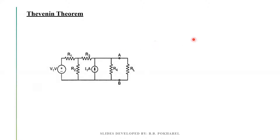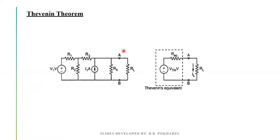We need to make the equivalent circuit. Now, let's take a look at the circuit. In the middle of this circuit, we can reduce it. Simply, we have voltage, we have resistance, we have resistance, and we can remove the current.